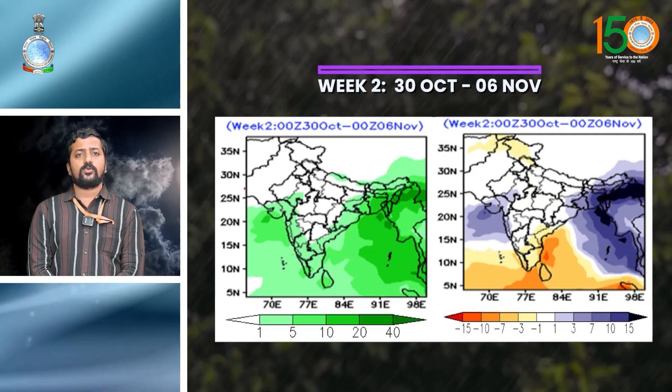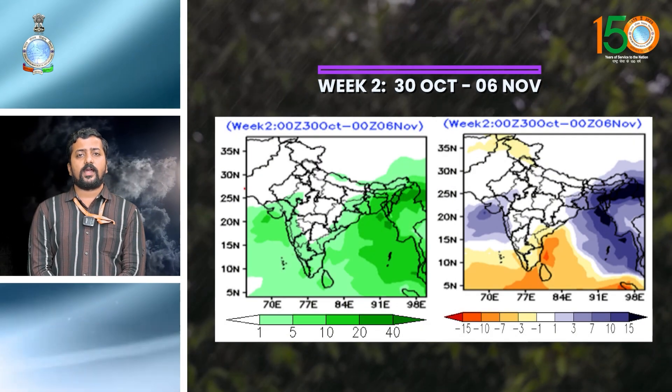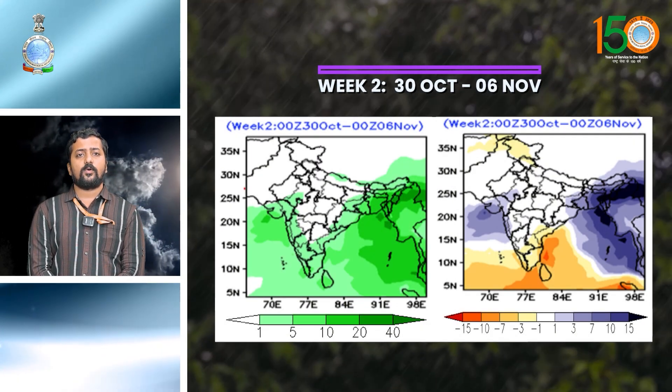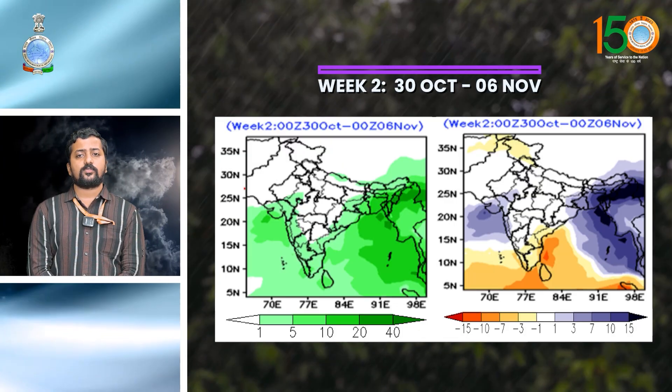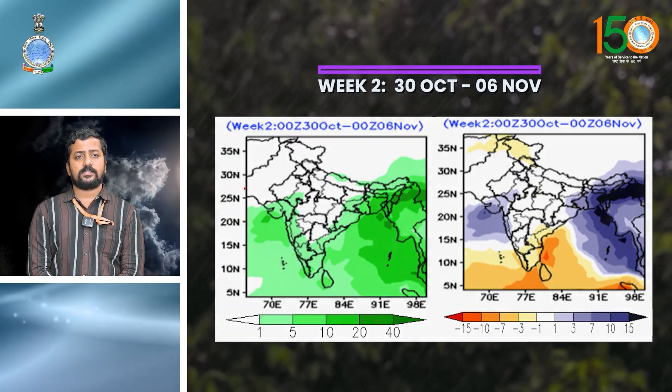With respect to week 2, rainfall activity is forecasted to be above normal over parts of Gujarat, parts of Gangetic West Bengal, and parts of Northeast India.